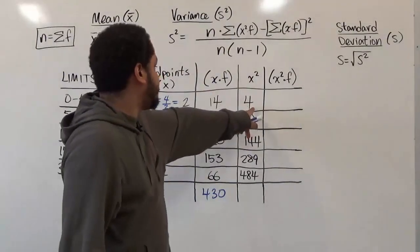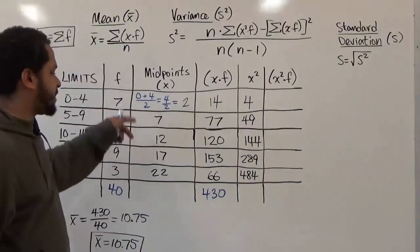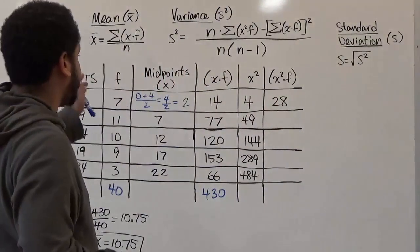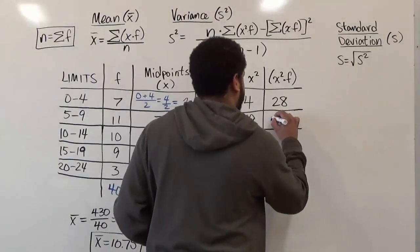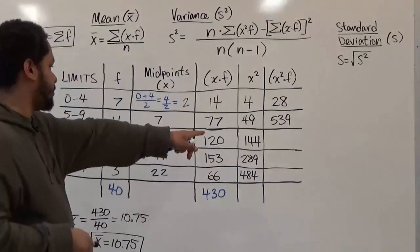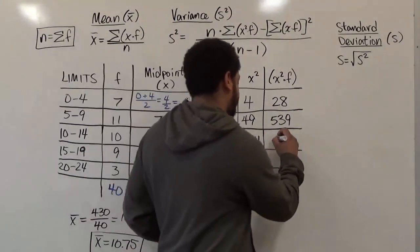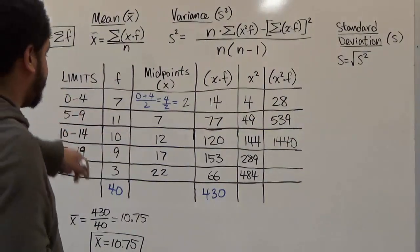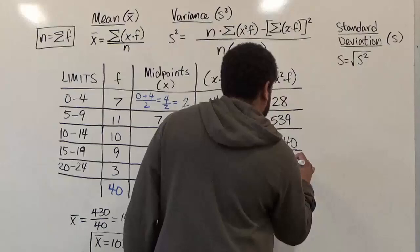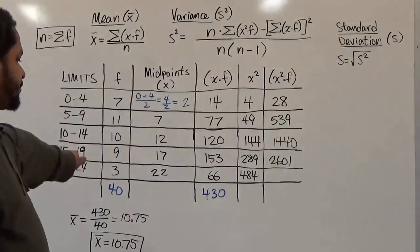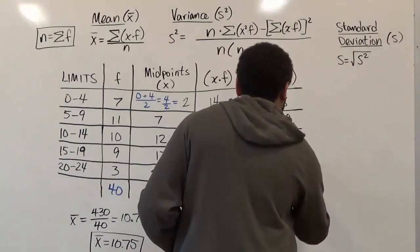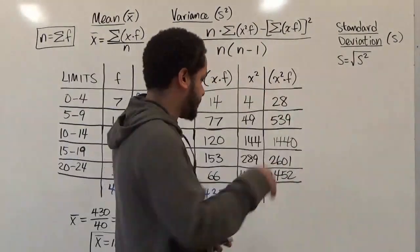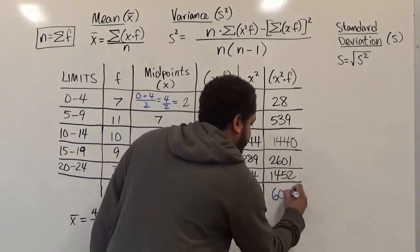Now we compute the x² times f column. Four times seven gives twenty-eight. Eleven times forty-nine is five hundred and thirty-nine. One hundred forty-four times ten is fourteen forty. Two hundred eighty-nine times nine is twenty-six oh one. Four hundred eighty-four times three is fourteen fifty-two. Now we take the sum of this column to get our sum of x² times f, which gives us sixty-sixty.